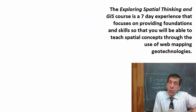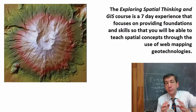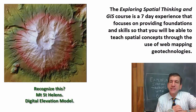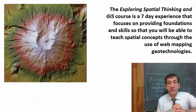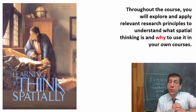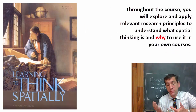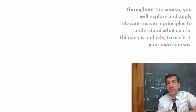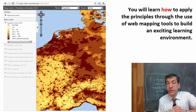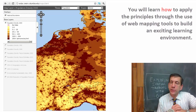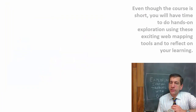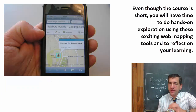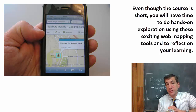The Exploring Spatial Thinking in GIS course is a seven-day experience that focuses on providing foundations and skills so that you will be able to teach spatial concepts through the use of web mapping technologies, and also do research with spatial technologies. Throughout the course, you will explore and apply relevant research principles to understand what spatial thinking is and why to use it in your own courses and your own research. You will learn how to apply the principles through the use of web mapping tools to build an exciting learning environment, and learn about the relevant research opportunities that spatial analysis might offer. Even though the course is short, you will have time to do some hands-on exploration using these exciting web mapping tools, and to reflect upon your own learning.